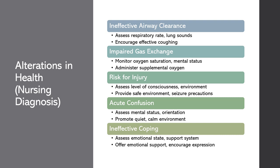Next is impaired gas exchange. Clinical manifestations might include dyspnea, tachypnea, cyanosis, and altered mental status. As nurses, we would assess the patient's respiratory rate, oxygen saturation, and mental status. To assist our patients, we might administer supplemental oxygen as needed and place them in a position that promotes optimal lung expansion, such as high Fowler's position. The rationale is to enhance oxygenation and facilitate gas exchange. We would educate patients and families about monitoring for signs of respiratory distress and seeking medical attention if needed.